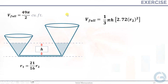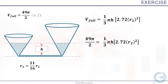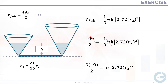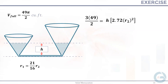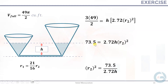Substituting the full volume 49π/2: 49π/2 = (1/3)πH · 2.72R₂². Canceling π from both sides and cross-multiplying by 3: 3 × 49/2 = 2.72H · R₂², giving 73.5 = 2.72H · R₂². Solving for R₂²: R₂² = 73.5/(2.72H).